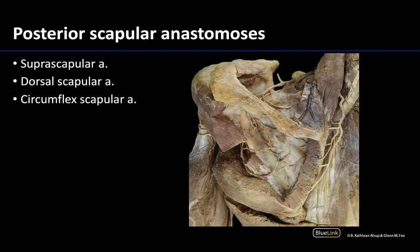We will start with the arteries that participate in the posterior scapular anastomosis, in the posterior region around the shoulder joint. Many of the muscles have been removed to better see the arteries, but the teres major is quite prominent, along with distal portions of the teres minor and infraspinatus. The spine of the scapula runs along the superior border and widens into the acromion, confirming we are looking at the posterior scapular region.